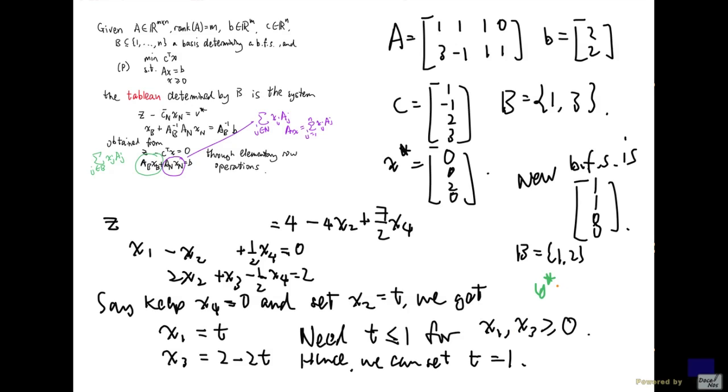so if we compute y star equal to A_B transpose inverse times c_B, y star is going to be minus 1 half and 1 half. And this solution is feasible to dual and satisfies complementary slackness with this new basic feasible solution.